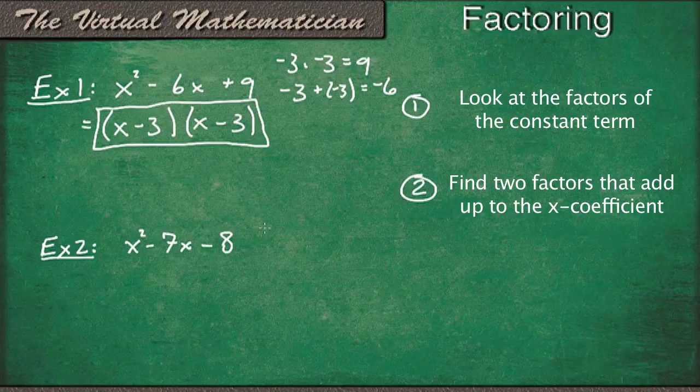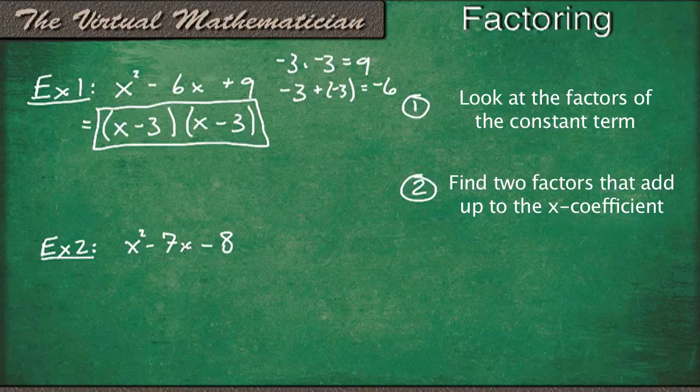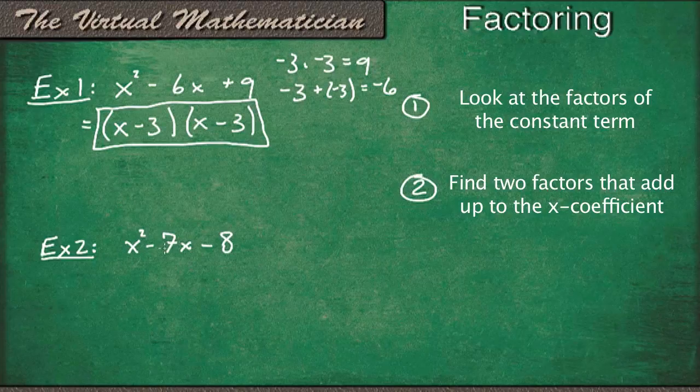Okay, now let's look at example 2. So in this case, the constant term is negative 8, and the x coefficient is negative 7. So we need to find two numbers that multiply to give us negative 8 and add up to be negative 7.